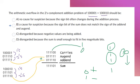Alright, so the answer is B. Definitely not C and D because we don't disregard the carries. A is also wrong. It says no cause for suspicion because the sign bit often changes during the addition process.